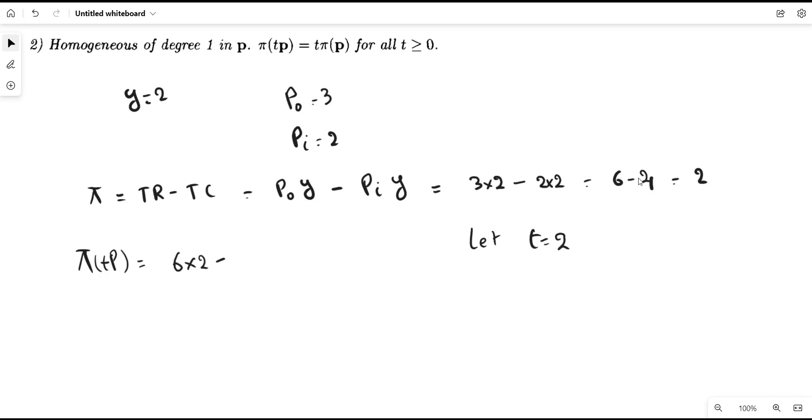Similarly, if we scale the input price by 2, it will become 4 and the output remains constant.